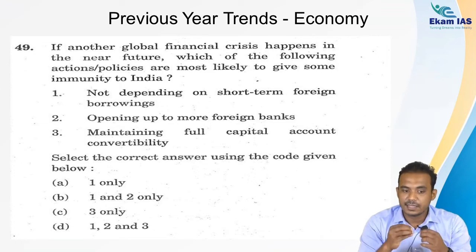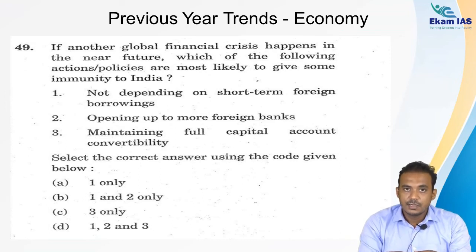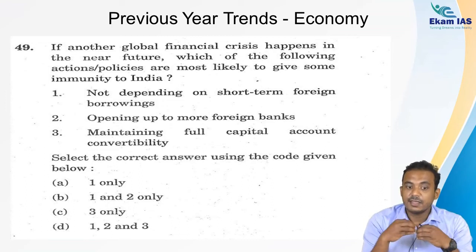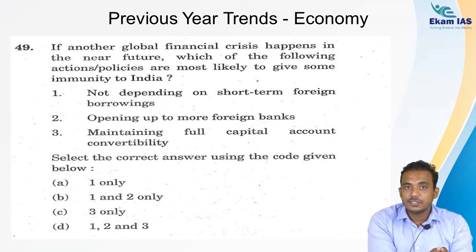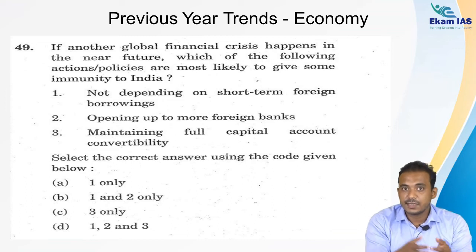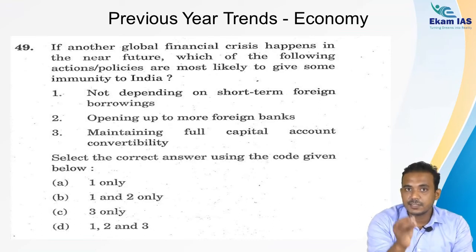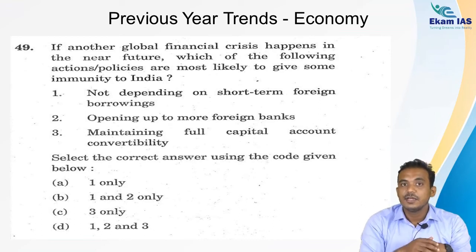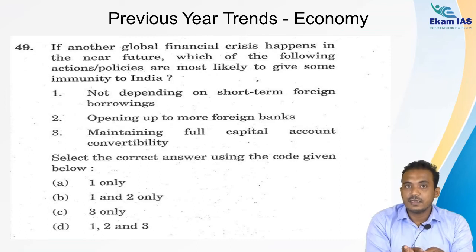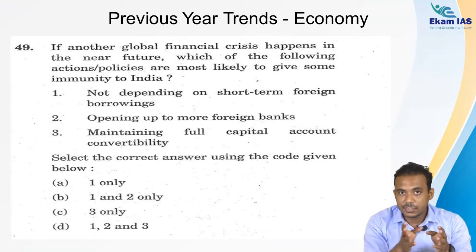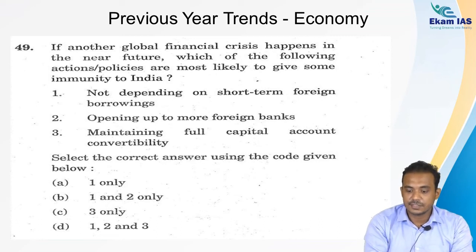Another question asks: 'If another global financial crisis happens in the near future, which of the following actions or policies would most likely give some immunity to India?' The context was COVID-19, with policy experts predicting another global financial crisis in the form of a balance of payments crisis. This static topic became relevant because of that prediction or expectation. Most questions on economic development that UPSC asks have been chosen specifically because of their current affairs relevance.